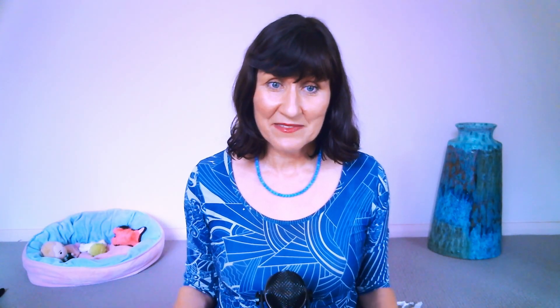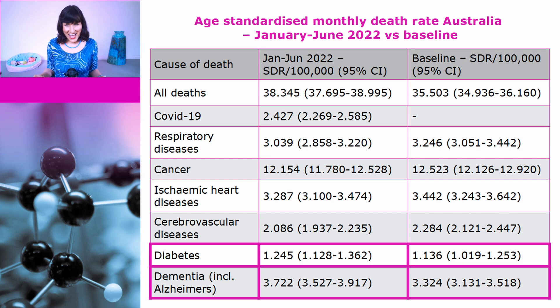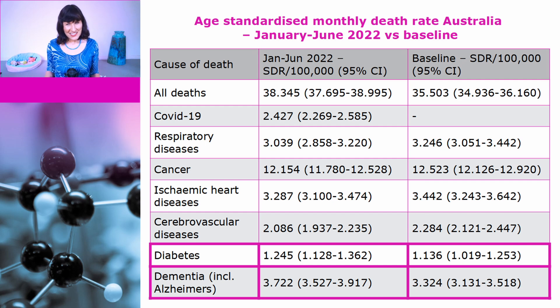So are there any causes of death that have increased? We've already discussed the increase in alcohol-related mortality. There has been a small increase in mortality from diabetes, but it is not statistically significant. There has, however, been a statistically significant increase in mortality from dementia. Is this increase in mortality concerning? Absolutely. Is it unexpected? Unfortunately, no.